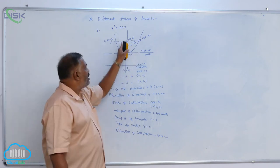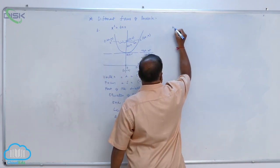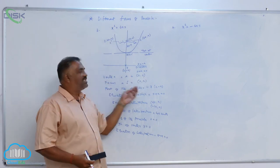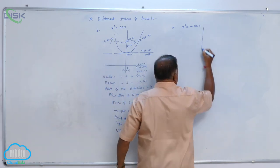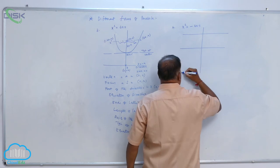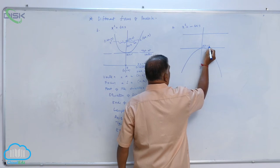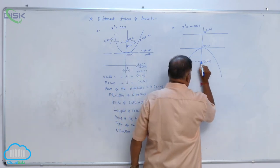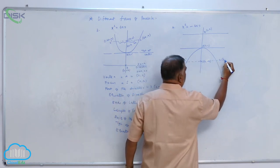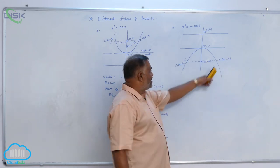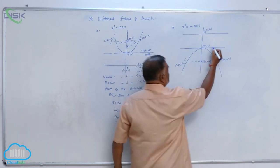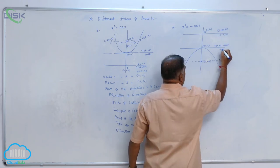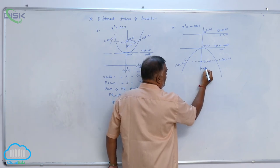These are the properties of the upward parabola x² = 4ay. Now we will see one more, that is x² = −4ay. This parabola is rotated by an angle of 180 degrees, making it a downward parabola. The vertex is A(0, 0), Z is (0, a), and the focus S is (0, −a). The ends of the latus rectum are L at (2a, −a) in the fourth quadrant and L' at (−2a, −a) in the third quadrant. The directrix equation is y − a = 0, the tangent at vertex is y = 0, and the total length of latus rectum is 4a.